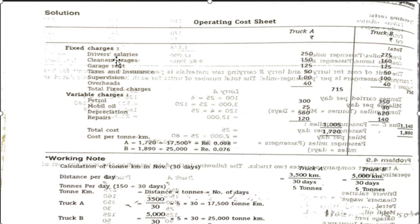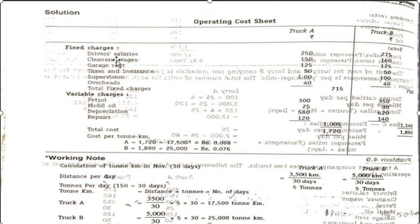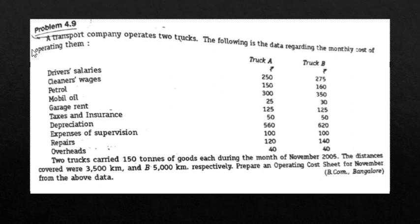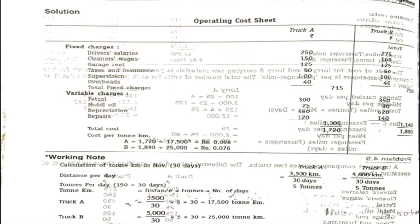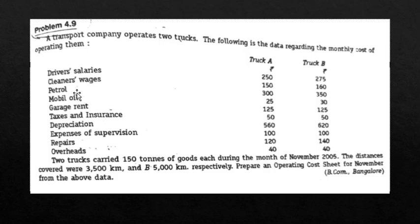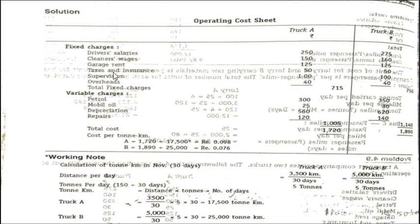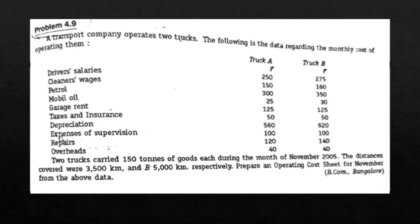Now we classify the expenses as fixed or variable. Driver's salary is fixed. Cleaner's wages is fixed. Petrol is variable. Mobile oil is variable. Garage rent is fixed. Taxes and insurance are fixed. Depreciation is variable. Expenses of supervision are fixed. Repairs are variable. Overheads are fixed.